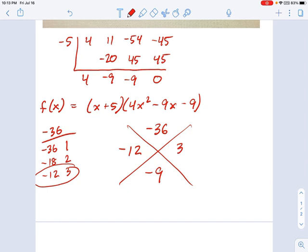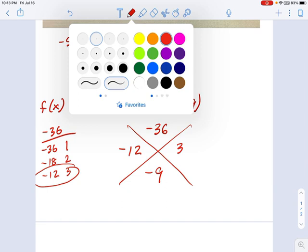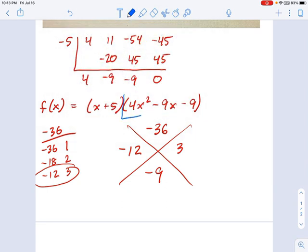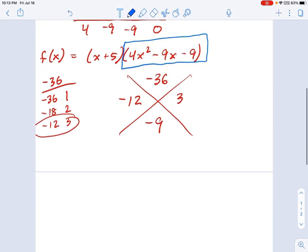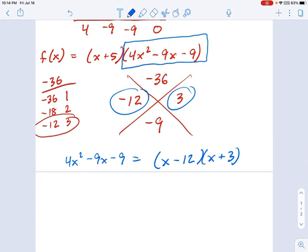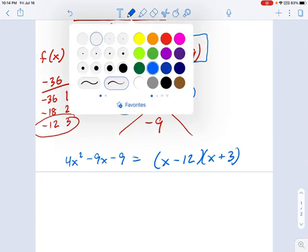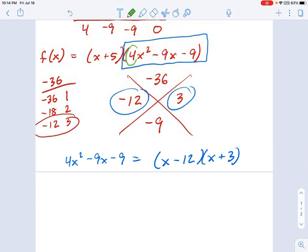So negative 12 and 3. And now we're going to go ahead and remember, I'm focusing on this right here. So if you see me ignoring x plus 5, we'll get to it later. Now I'm going to write this 4x² - 9x - 9 as x minus 12 and x plus 3. I took those two side numbers. But remember, when you're dealing with one of these polynomials which has a number in front of the x², the way we have to deal with that is by dividing each of these by whatever that number was. So in this case, I'm dividing by 4.